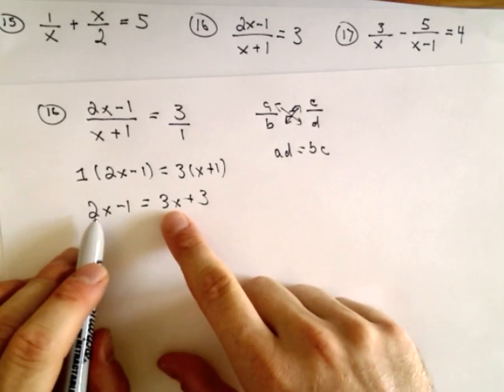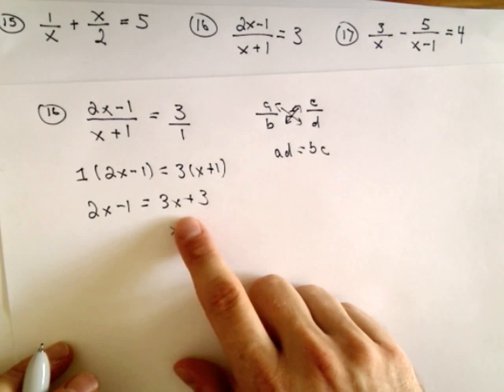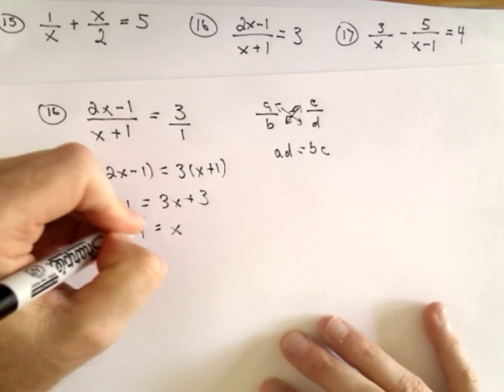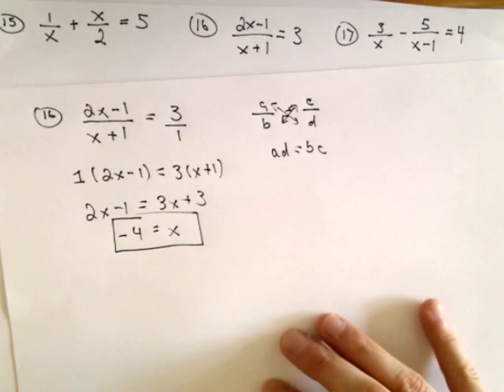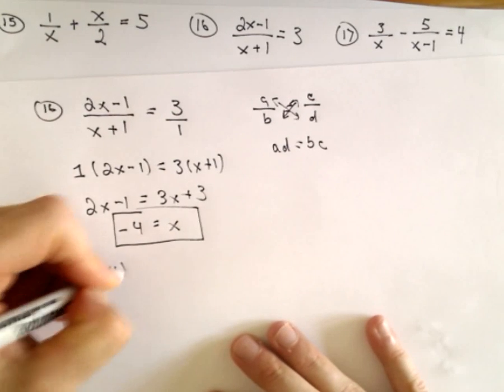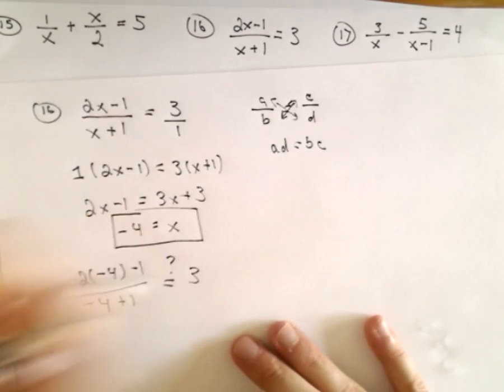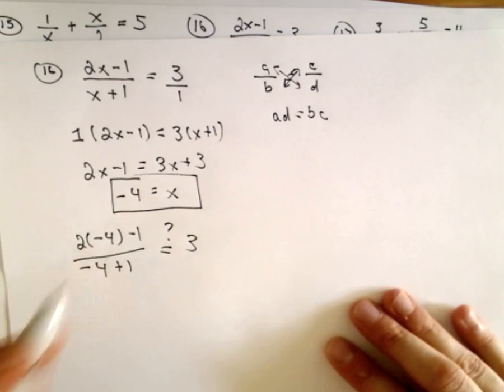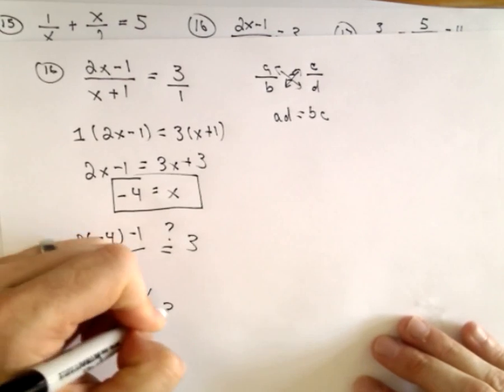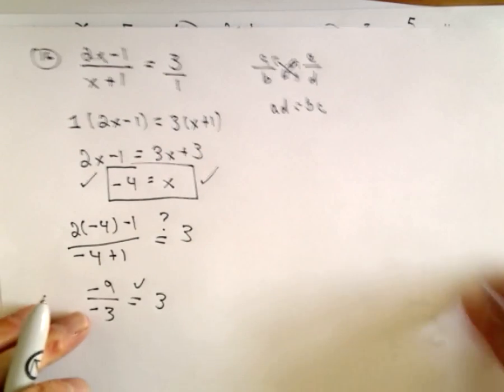This is just a linear equation. If we subtract 2x from both sides, we'll have x on the right side. If we subtract 3 from both sides, negative 1 minus 3 will give us negative 4. This one's easy, I'm going to check it. We've got 2 times negative 4 minus 1 over negative 4 plus 1. Does that equal 3? That's negative 8 minus 1, which is negative 9, over negative 3. Hey, definitely, that does equal 3. So x equals negative 4 is a solution.